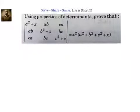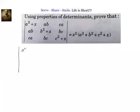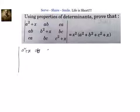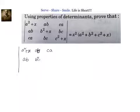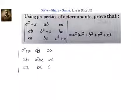So let's go ahead and see what we can do. We will write it down. What is given to us is the matrix: first row is a squared plus x, ab, ca; second row is ab, b squared plus x, bc; third row is ca, bc, c squared plus x.